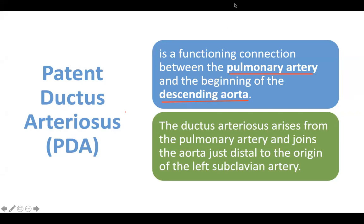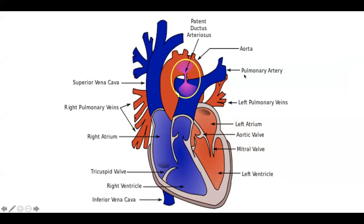Location-wise, the ductus arteriosus arises from the pulmonary artery and joins the aorta just distal to the origin of the left subclavian artery — please memorize that. Here, highlighted in yellow, we have the ductus arteriosus, showing that functional communication.